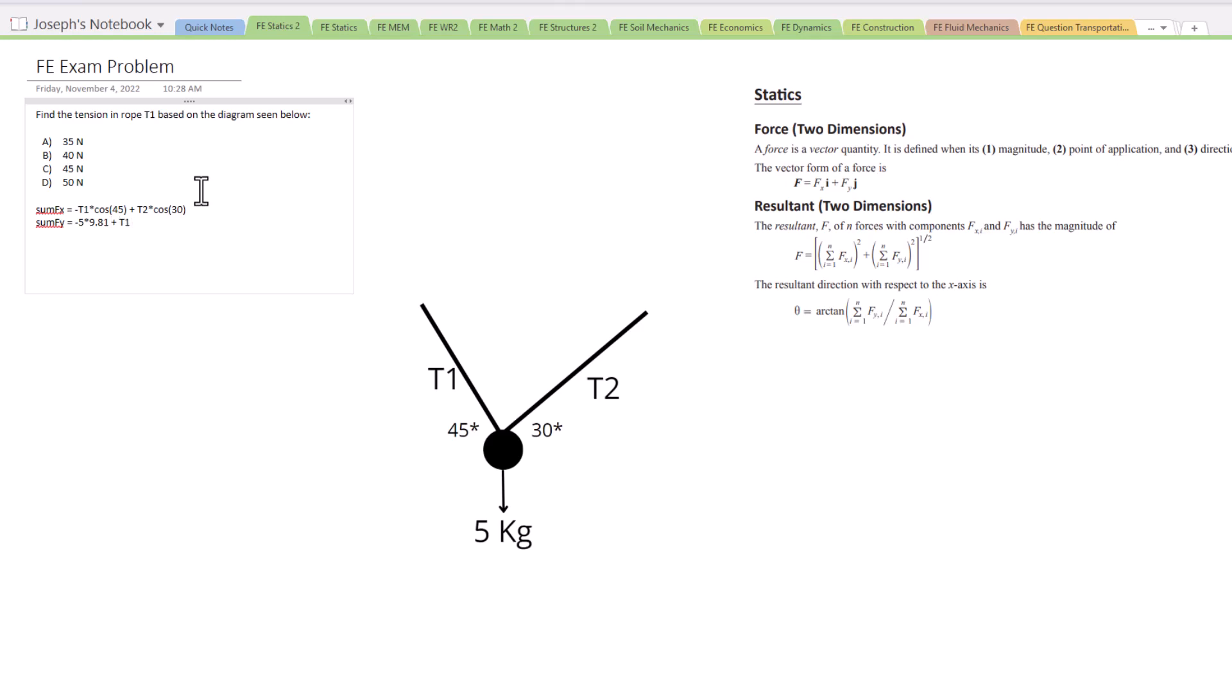And then we have T1 still. Now both of these are going upwards in the positive direction working against that 5 kilogram force, or holding it up, I should say. Then we have sine of 45 there. And then we're also going to have plus T2 times the sine of 30.